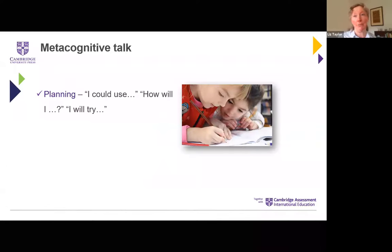Many of you will be familiar with Hattie's work on visible learning. He's noted studies that produce an overall effect size of 0.69. Effect sizes show how much potential a particular strategy, if taught well, has to impact on students' achievement over time. 0.4 is seen as the baseline for standard teaching in terms of student development, so 0.69 is quite nicely above that. This research shows there is real potential here, if implemented well, for these strategies to impact on students' achievement.